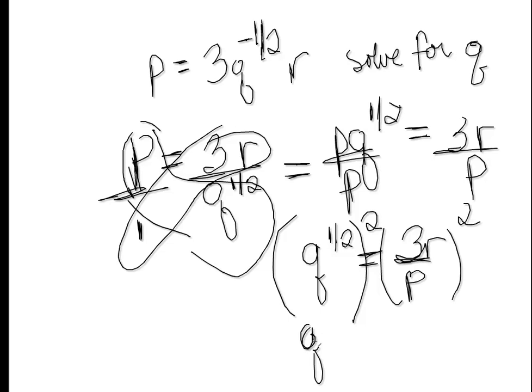And you have to apply one of the exponent rules here. You have to raise everything here to the second power. So you need to raise the 3 to the second power. 3 to the second power is 9. And then you have R squared. And then you have all over P squared.